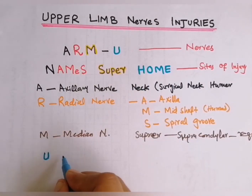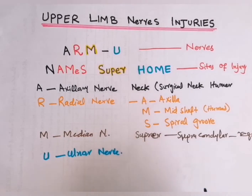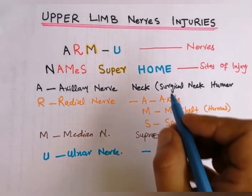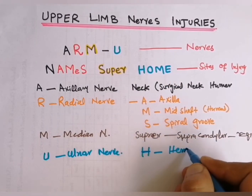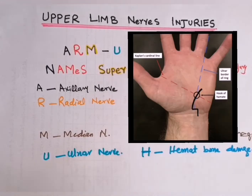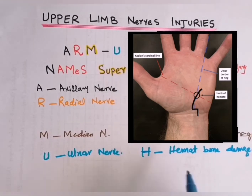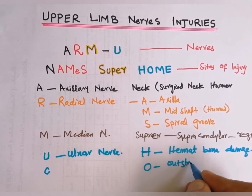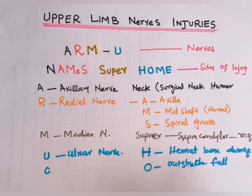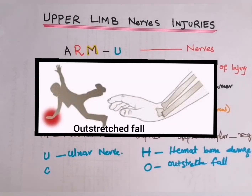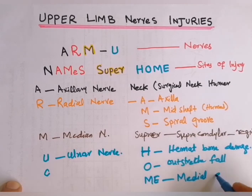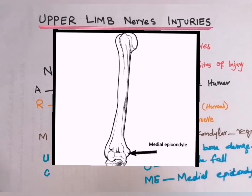U in RMU is for ulnar nerve, which is commonly damaged in HOME of the mnemonic. Ulnar nerve is damaged in HOME, where H is for hamate bone damage. Here I am representing the exact site of hamate bone damage, which causes palsy of the ulnar nerve. O is for outstretched fall — in an outstretched fall, the most commonly damaged nerve is the ulnar nerve. M in HOME is for medial epicondyle. Here I am showing the exact site of the medial epicondyle, which causes damage to the ulnar nerve.